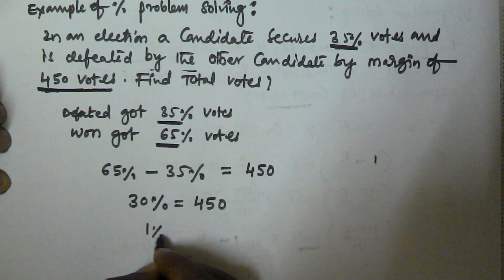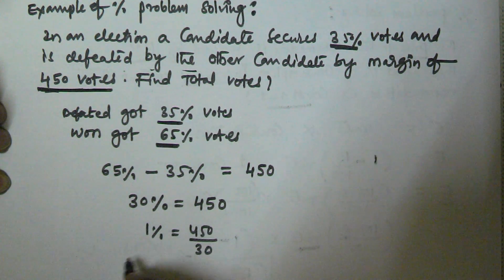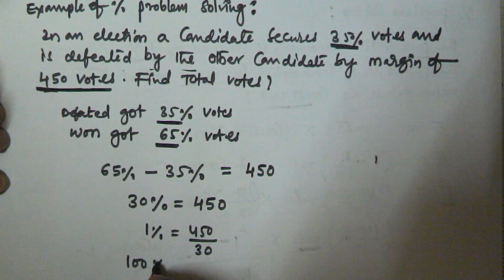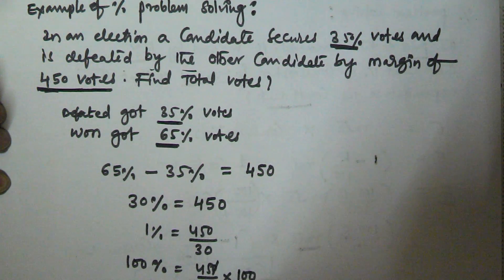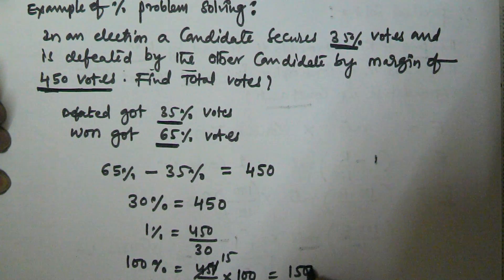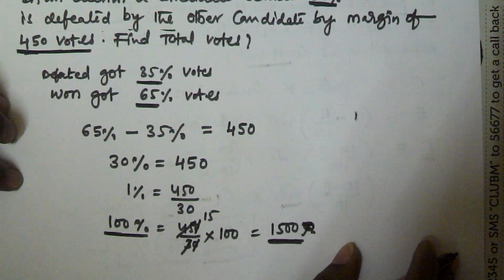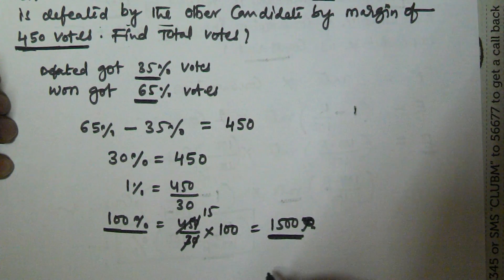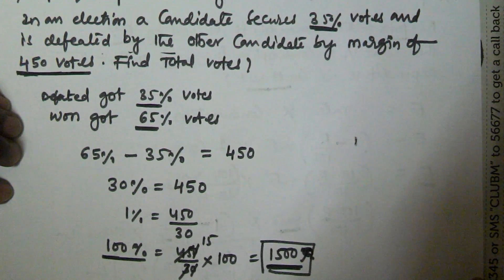So 1 percentage is equal to 450 divided by 30. The 100 percentage is equivalent to 450 by 30 into 100. The 30 and 100 simplify, giving us 1500. So 100% of votes is equal to 1500.